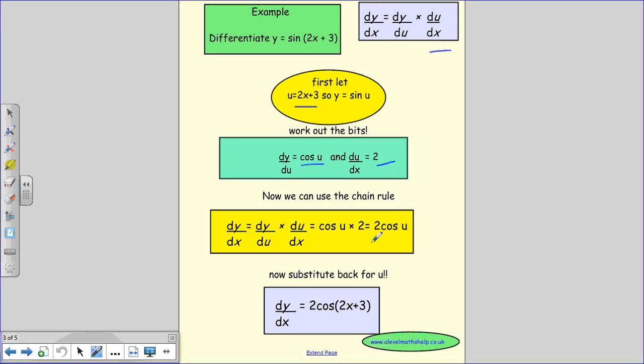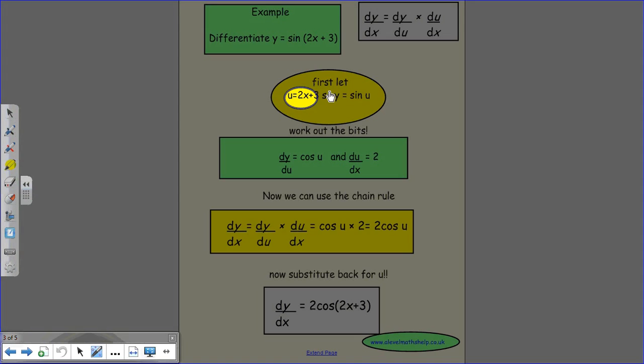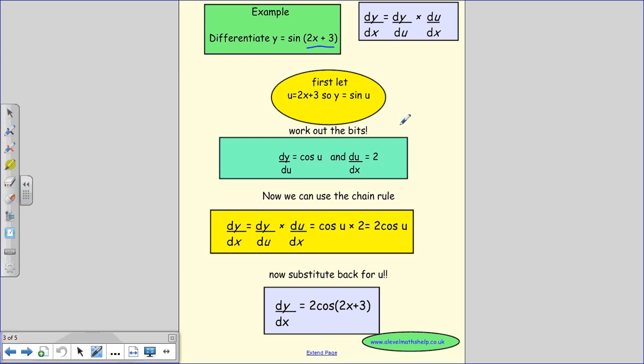Then we put it all together and we get 2 cos u. And then you need to remember that you need to replace your u with the 2x plus 3 because the question was in terms of x and not in terms of u.